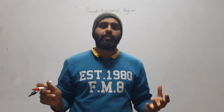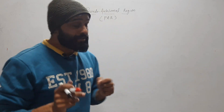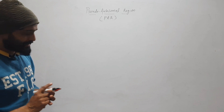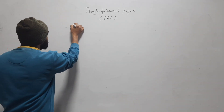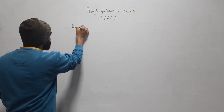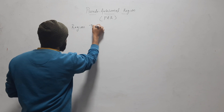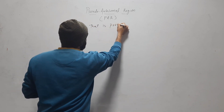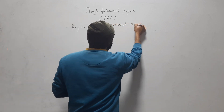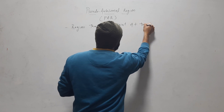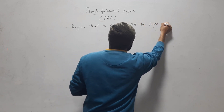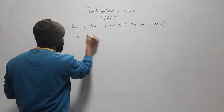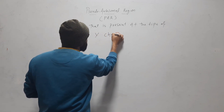Hello friends, welcome to my YouTube channel. In this video we will discuss the pseudo autosomal region. The pseudo autosomal region is a region that is present at the tips of X and Y chromosomes.